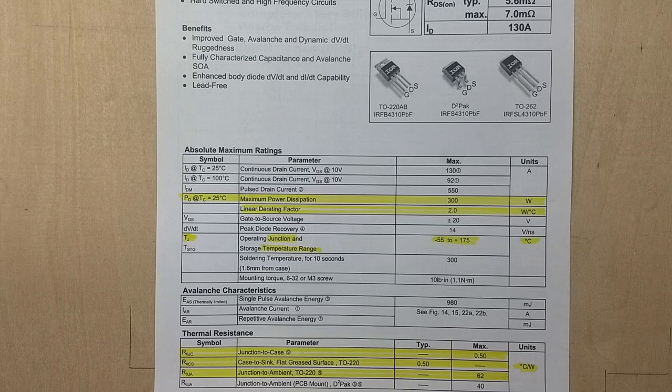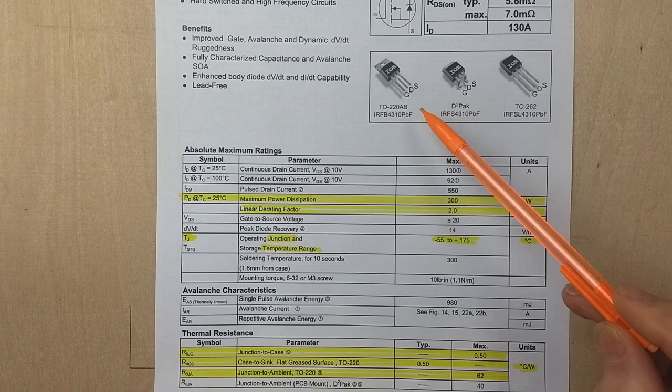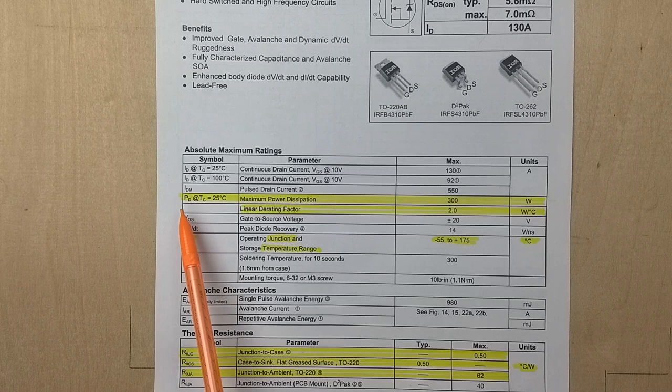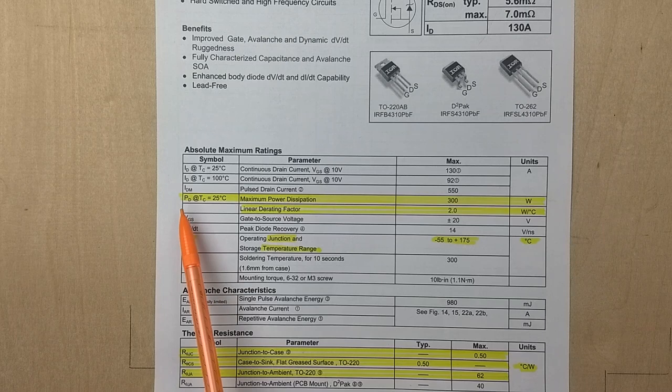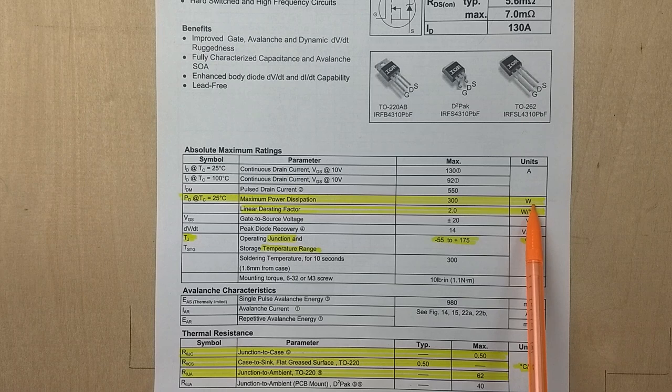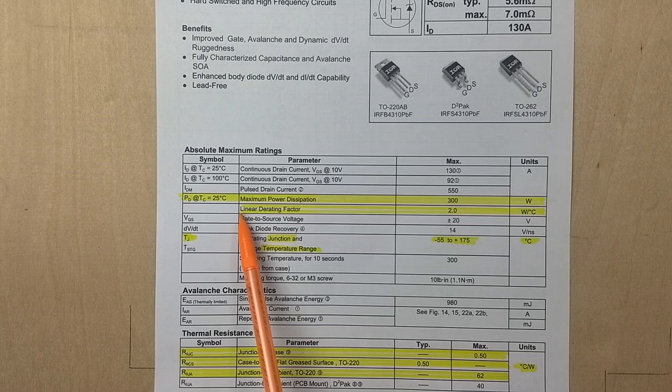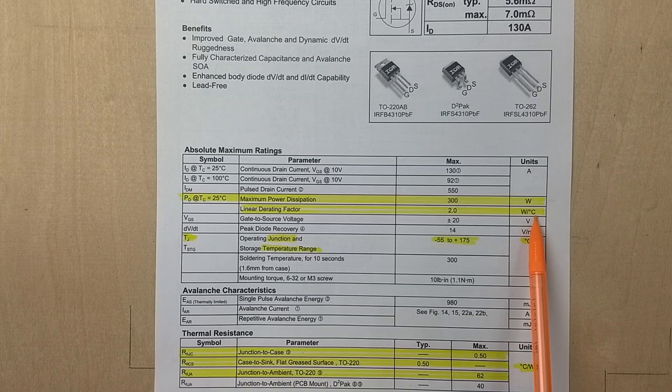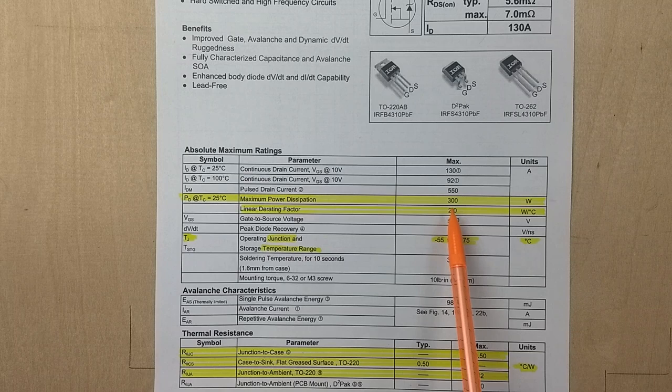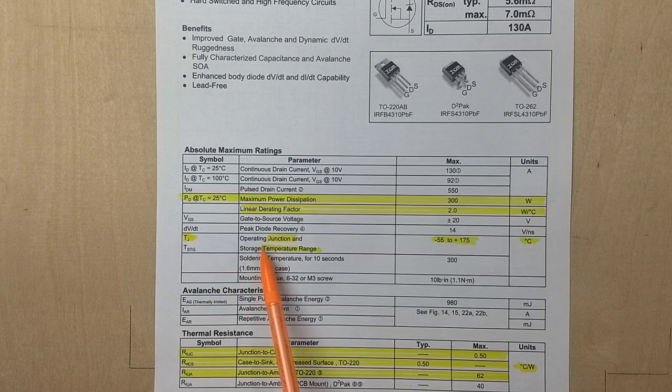Now here's the datasheet for a power MOSFET in the same TO220 package. And here it's telling us the maximum power dissipation is 300 watts. And that would be with a heat sink. And a linear derating factor of 2 watts per degree C. So I will plot that as a graph and show that to you here shortly. Now it's saying the maximum junction temperature is 175 degrees C.